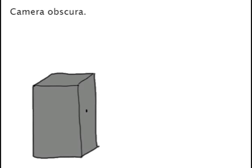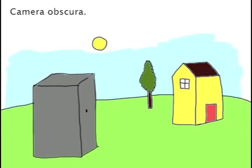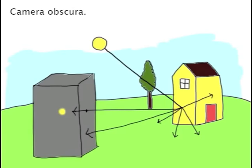We can put our camera obscura in the landscape. Rays of light reflect off objects in the landscape and bounce off in all directions. Most of the light will be scattered, but some will make it through the opening in our camera obscura.